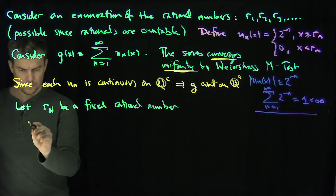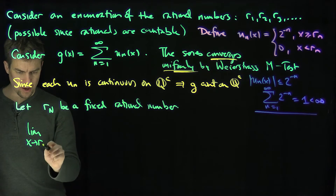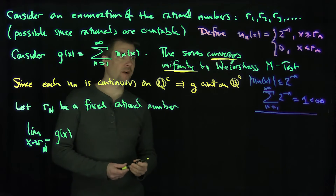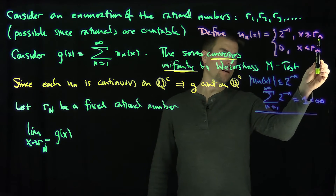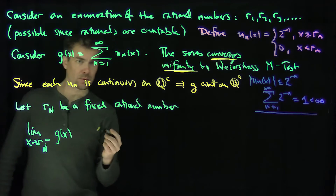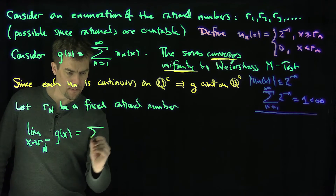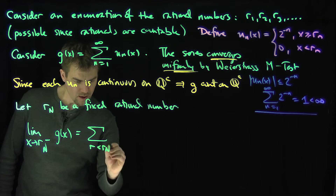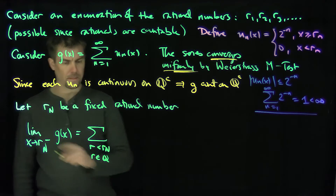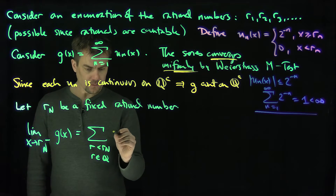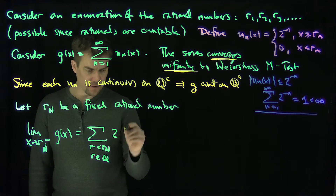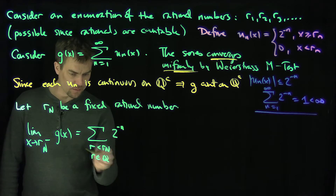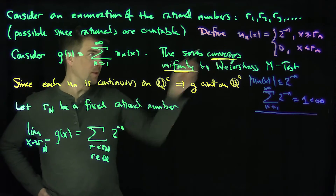Let's look at the limit as x approaches r_n from the left of g of x. As I approach r_n from the left, I don't include r_n, so I sum over all rational numbers r strictly less than r_n. This is going to be the sum over all rationals r strictly less than r_n of 2 to the power negative n, where n comes from the index corresponding to those values of r.